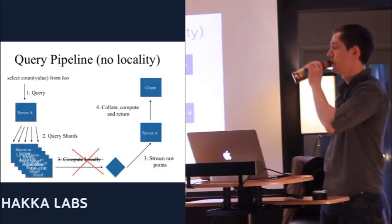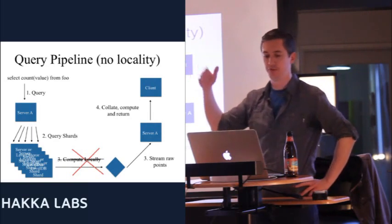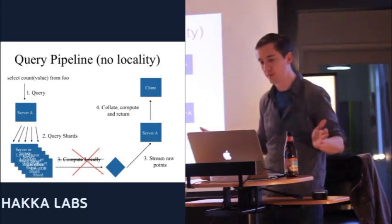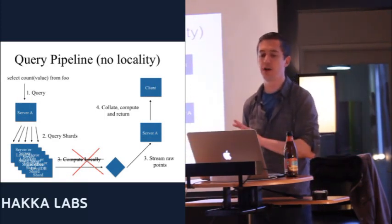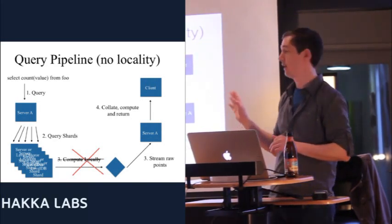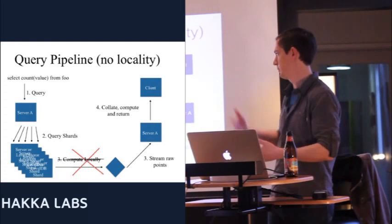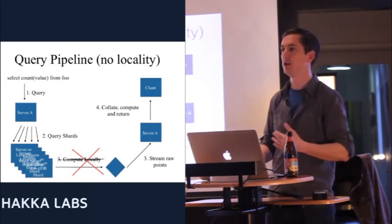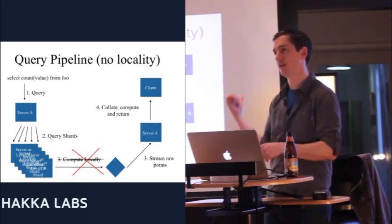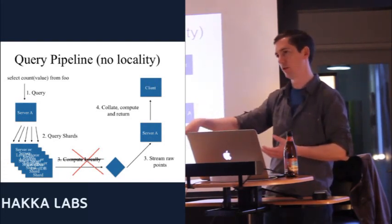Consider this query: select count of value from foob, for all time. The problem is we're not doing intermediate values for count — and this is definitely more of a problem with percentiles or quantiles. Server A distributes the query, but instead of computing an intermediate result, the shards stream all the raw data points back to server A, which then has to compute the result. All the raw data goes over the network to the server that initially received the query.